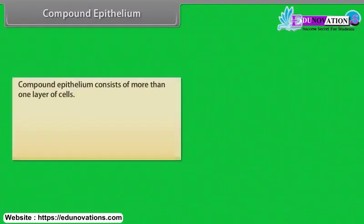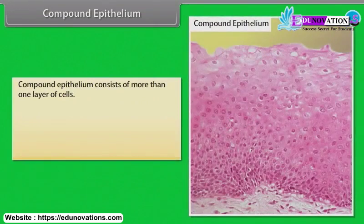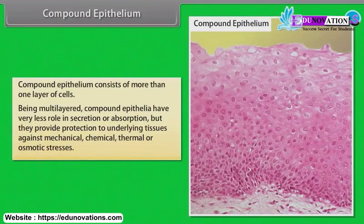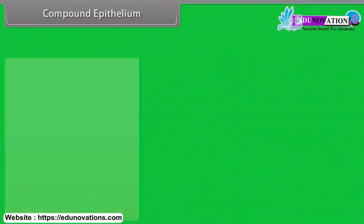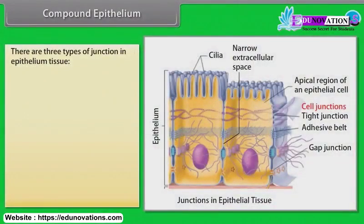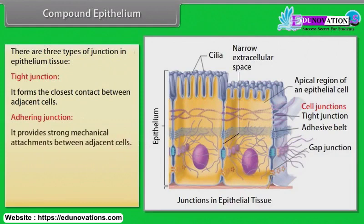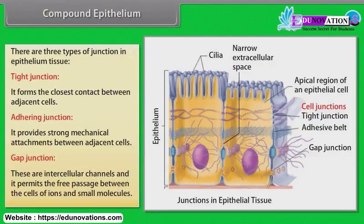Compound epithelium consists of more than one layer of cells. Being multilayered, compound epithelia have very little role in secretion or absorption, but they provide protection to underlying tissues against mechanical, chemical, thermal or osmotic stresses. There are three types of junction in epithelial tissue: tight junction, which forms the closest contact between adjacent cells; adhering junction, which provides strong mechanical attachments between adjacent cells; and gap junction, which are intercellular channels that permit the free passage of ions and small molecules between cells.